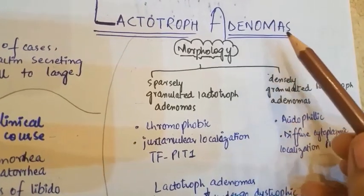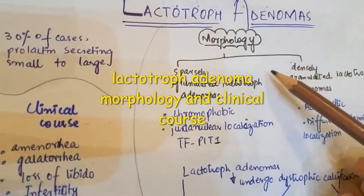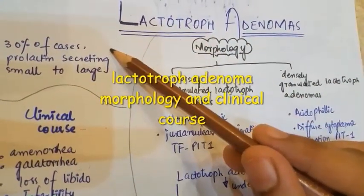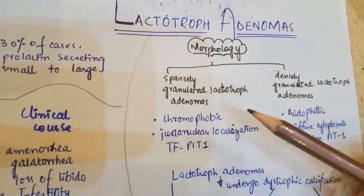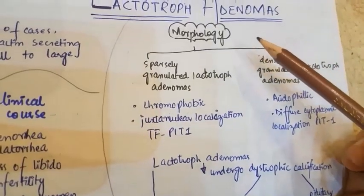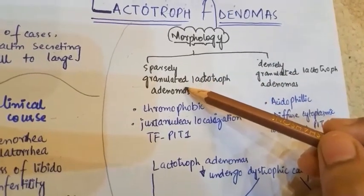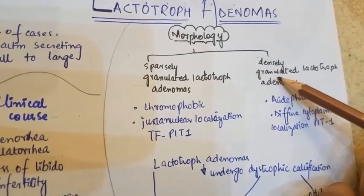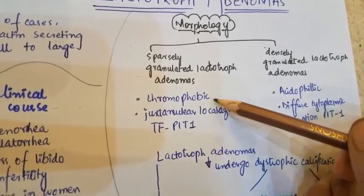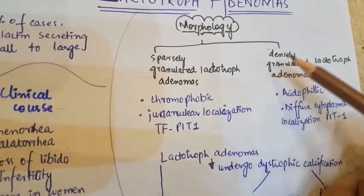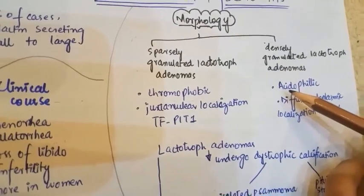Lactotroph adenomas are the most common type, present in 30% of cases. They are prolactin-secreting and may be large or small. Morphologically, they are divided into sparsely granulated lactotroph adenomas, whose cytoplasm will be chromophobic, and densely granulated lactotroph adenomas, whose cytoplasm can be acidophilic.